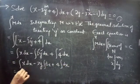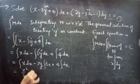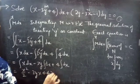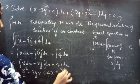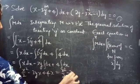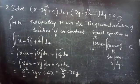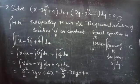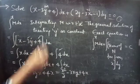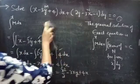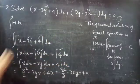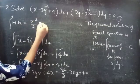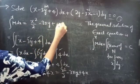This equals x squared over 2 minus 3y times x plus 4 times x. So the first integral equals x squared over 2 minus 3xy plus 4x.